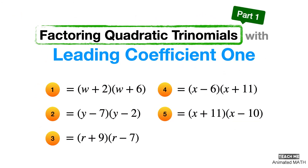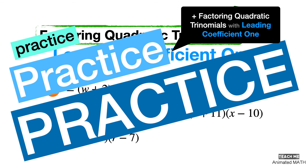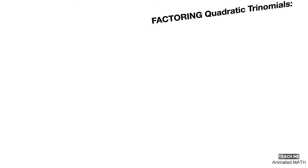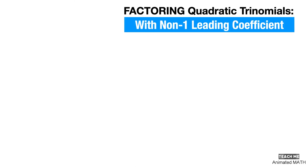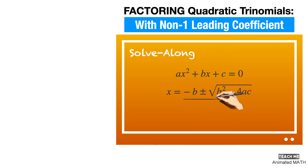And here is the answer key for this worksheet. I hope you learned how to factor quadratic trinomials with leading coefficient 1 in this solve-along video. Just practice, practice, practice — factoring quadratic trinomials with leading coefficient 1 until it becomes second nature to you. And don't be afraid to make mistakes, since correcting them is part of your learning process. Our next solve-along worksheet video is about factoring quadratic trinomials with non-1 leading coefficient, which involves more trial and error. But don't worry because our video will have step-by-step solutions that are very easy to follow. So be sure to subscribe to TeachMeAnimatedMath, and don't miss out. See you next time.